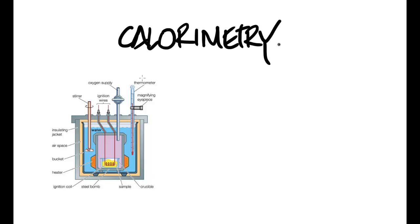Our food or sample is in here; we have these ignition wires and a coil that gets hot and ultimately ignites the sample. To make sure combustion within here is complete, we have an oxygen supply — lots of oxygen being pumped in. This whole thing is found within a steel bomb casing, around which there is a heater, and around that is essentially a big water bath — this whole thing is immersed in water.